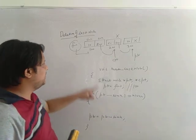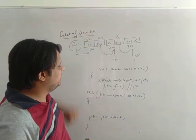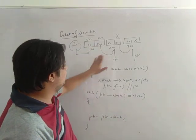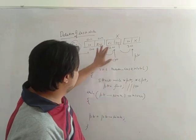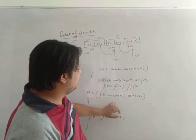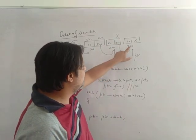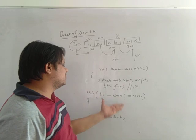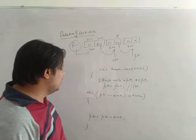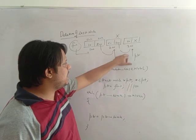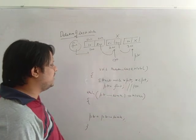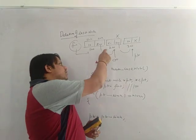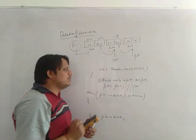Let's debug this code. ptr link is 200, 200 not equals null — condition true, ptr moves to 200. 200 link is 300, not equals null — ptr moves to 300. 300 link is null, null not equals null — condition false, and we come out of the loop. At this point ptr is pointing at 300.